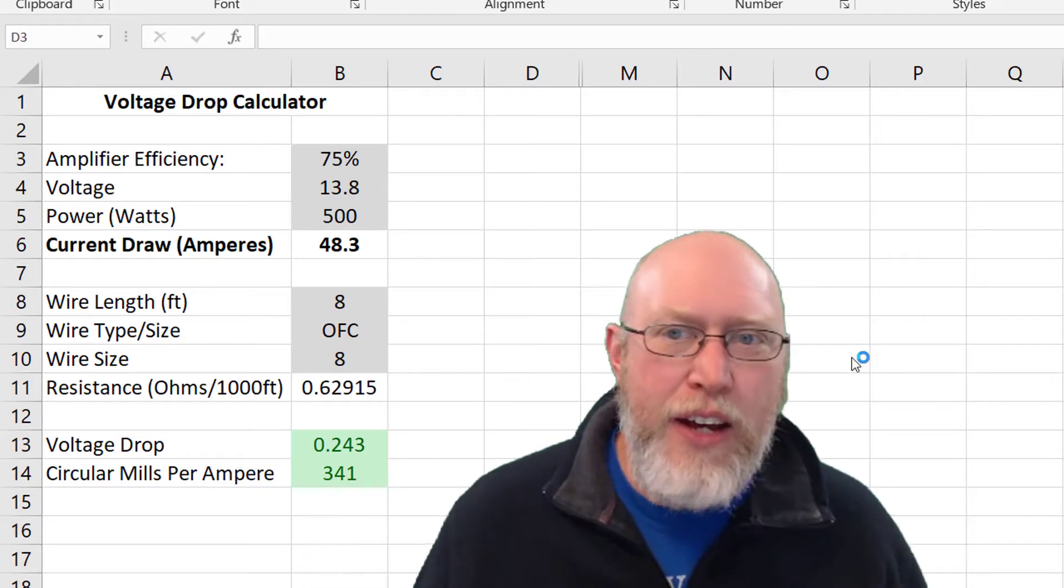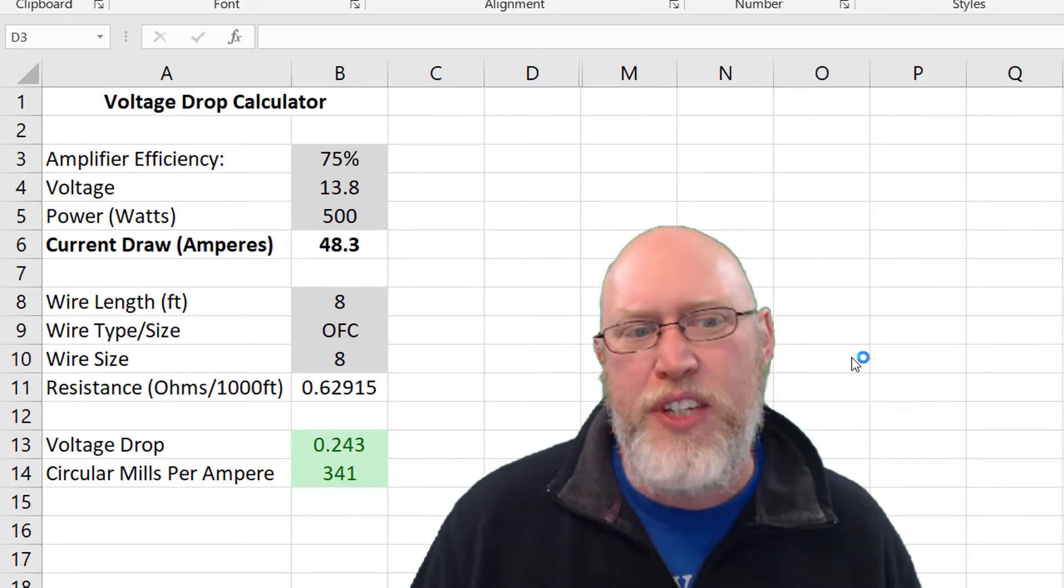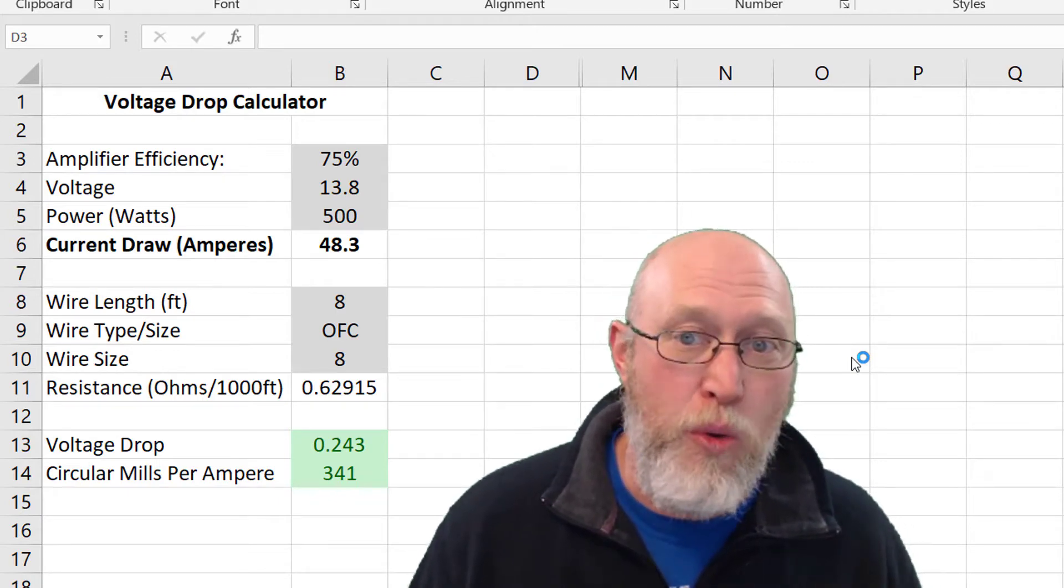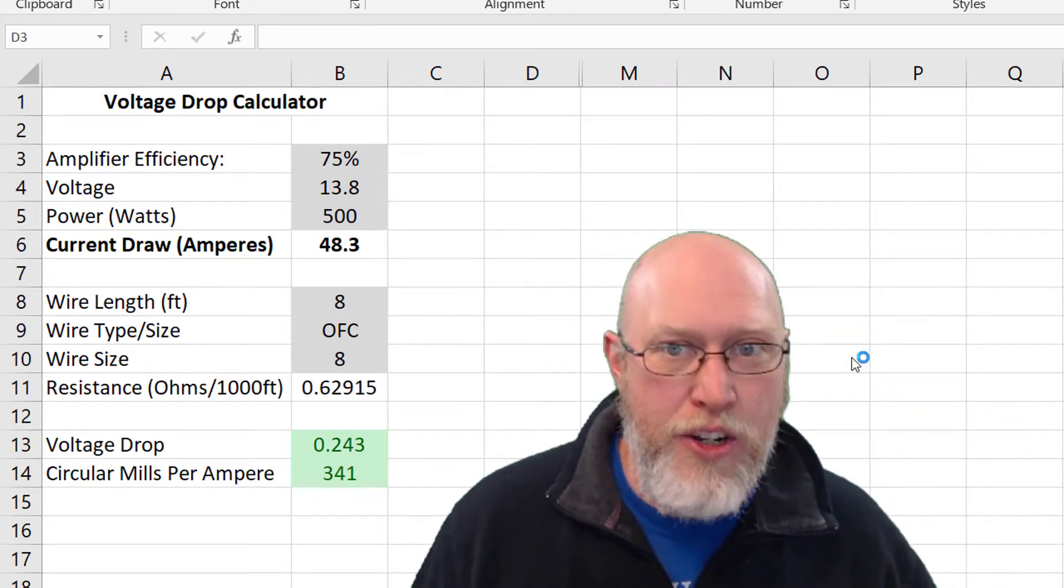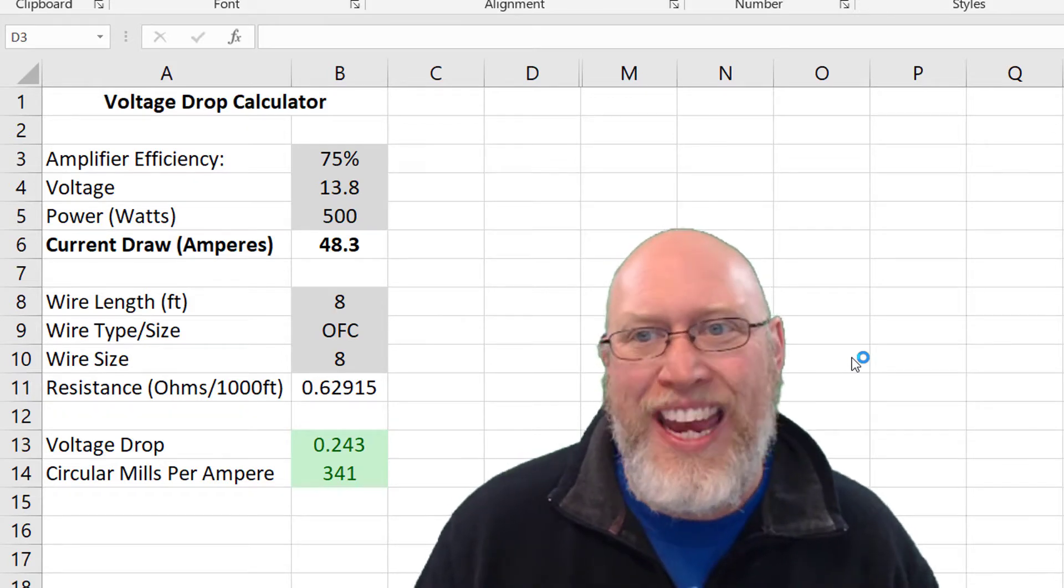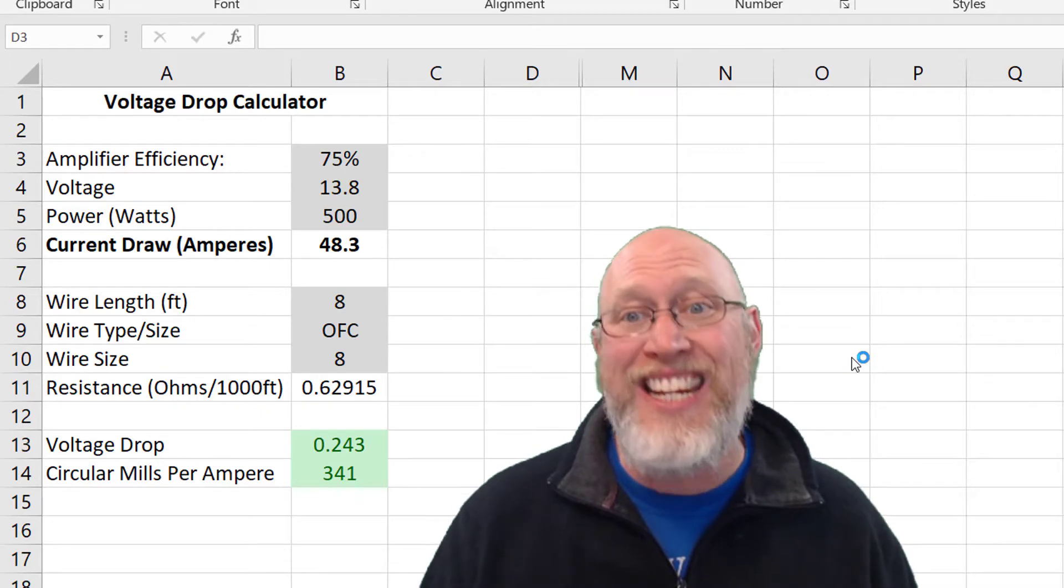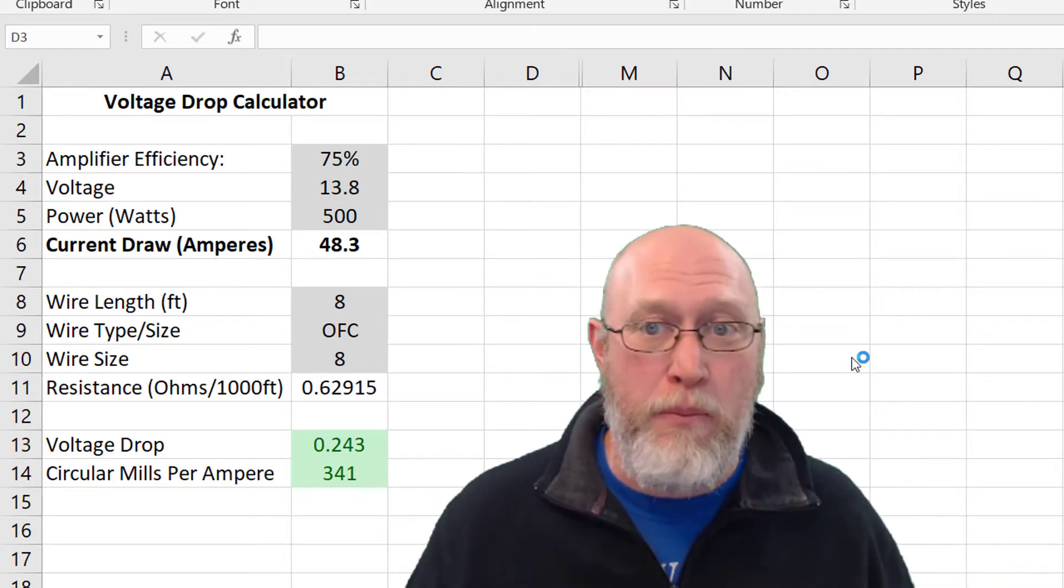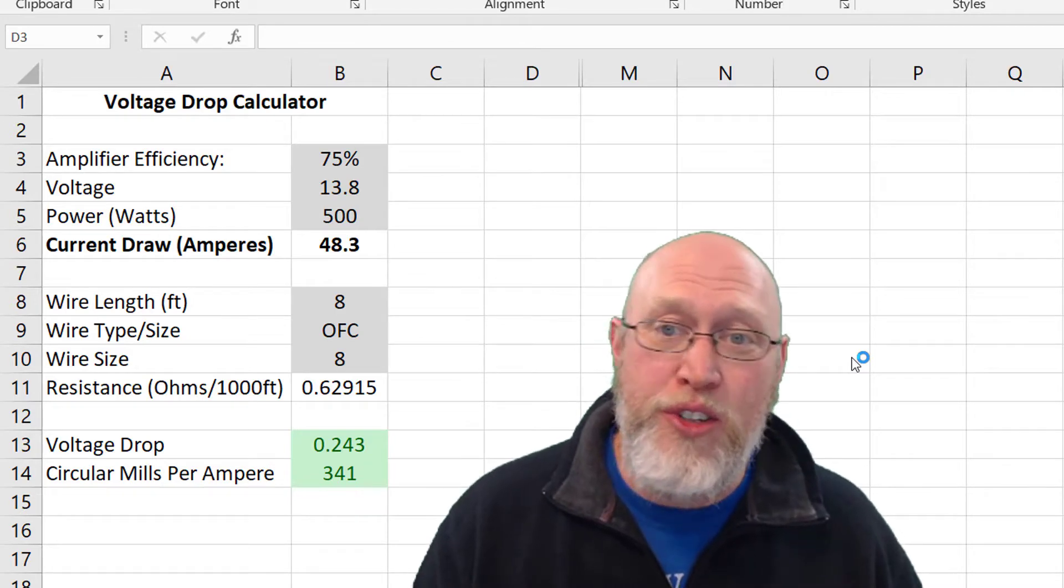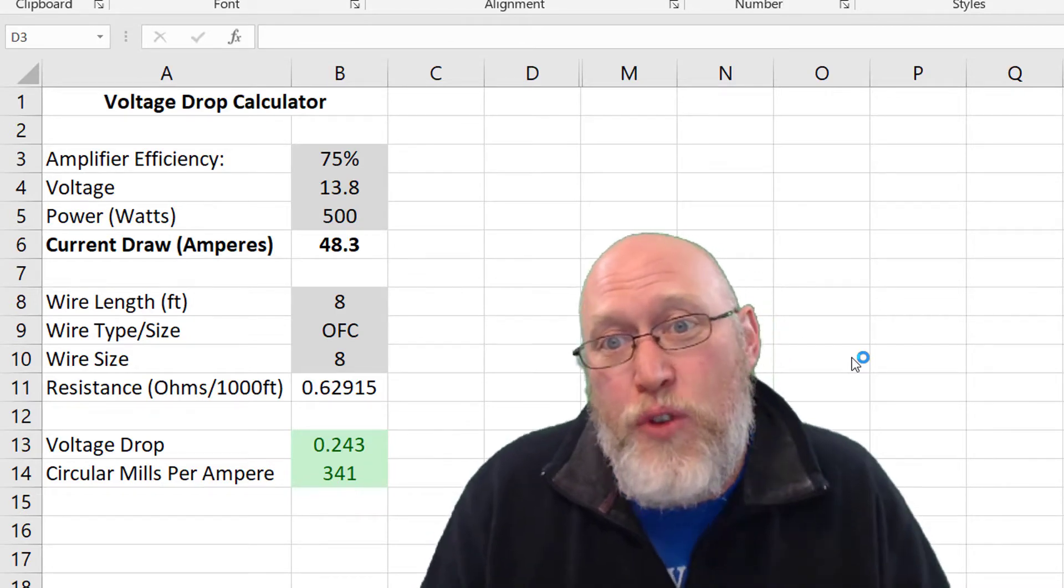So here's the calculator. I'm going to show you real quick how to use it. Everything that's in gray is something that you can change for your own particular situation, for your car and your install. Everything that's in green is a result that you're going to want to look at. Green means good, green means go. If everything's green, you're all set. You've chosen an appropriate wire for the situation.